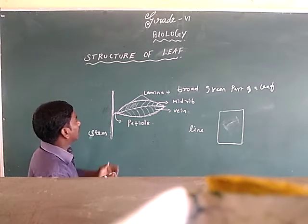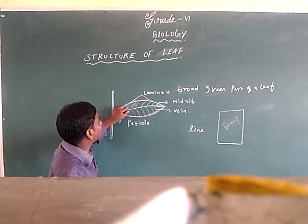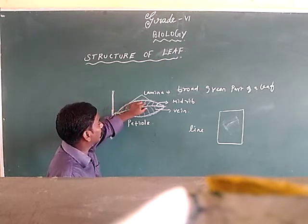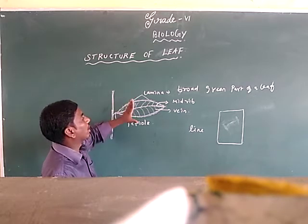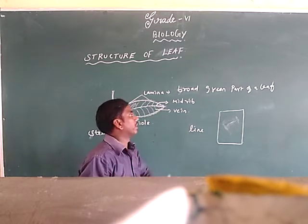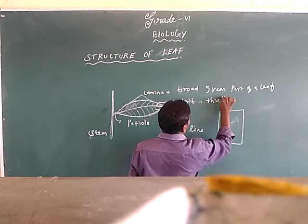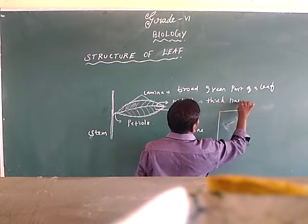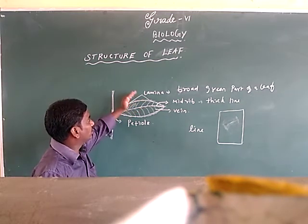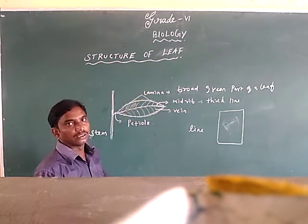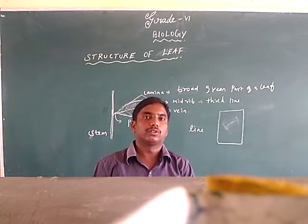The thick line present in the center of the lamina is called the midrib. The midrib means nothing but the thick line present along the center of the lamina.